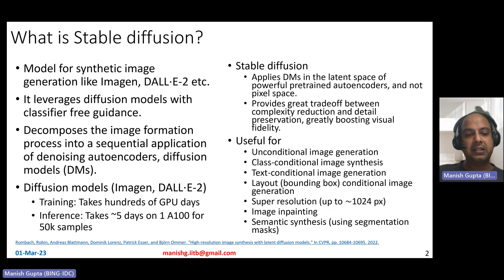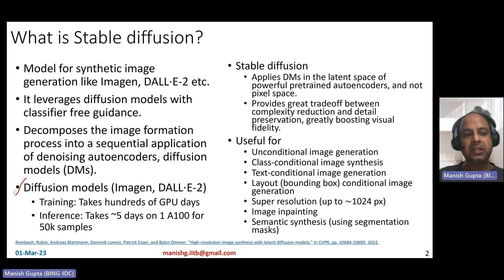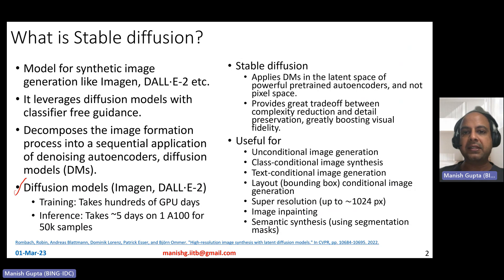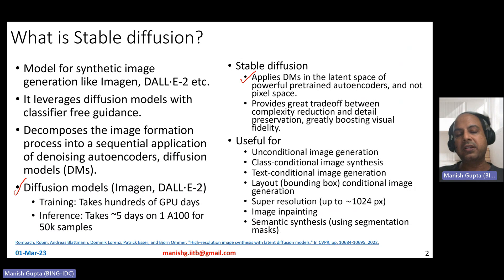The problem with diffusion models — or models based on diffusion model training, like Imagen and DALL-E — is that they are very inefficient in some ways, because they operate in pixel space. Training-wise, they take hundreds of GPU days. Inference-wise, it takes about five days on 800 GPUs for 50k samples to be generated. They are pretty inefficient in that sense. Stable diffusion solves this problem by applying diffusion models in the latent space of powerful pre-trained autoencoders, and it does not do diffusion in the pixel space, which makes it pretty efficient.